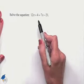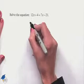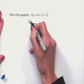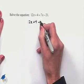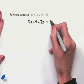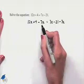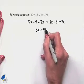We'll begin by subtracting 7x from both sides of the equation. That gives us 12x + 4 - 7x = 7x - 21 - 7x. Combining like terms, we have 5x + 4, and on the right-hand side the 7x subtracts out to give us -21.